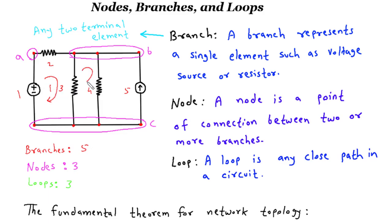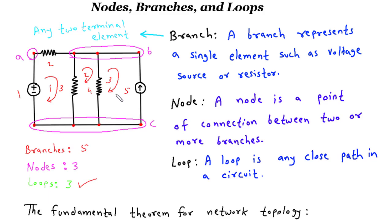Loops are vital in analyzing circuit behavior and determining circuit characteristics such as voltage and current distribution. They are usually depicted as a closed shape in circuit diagrams, often using dashed lines.